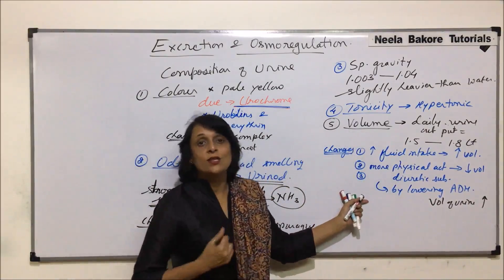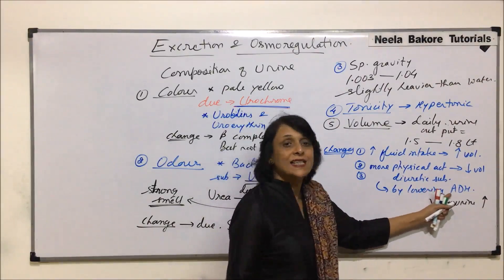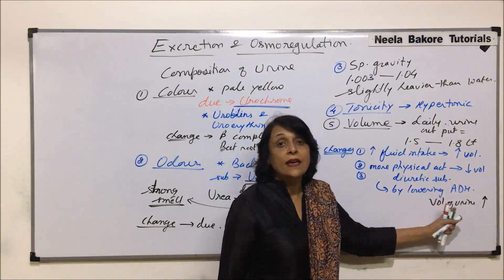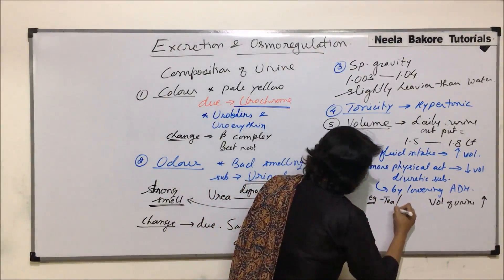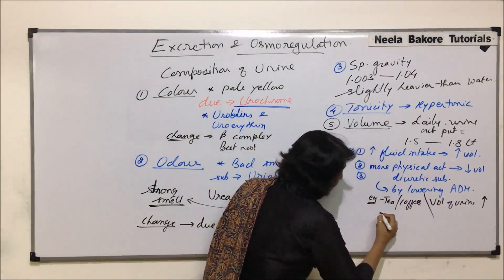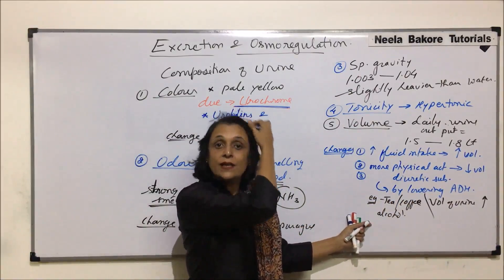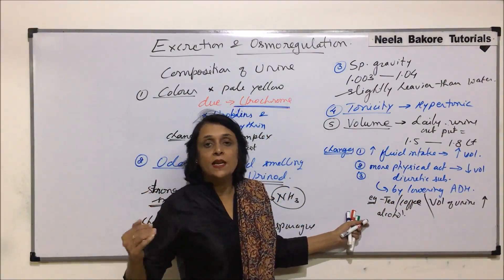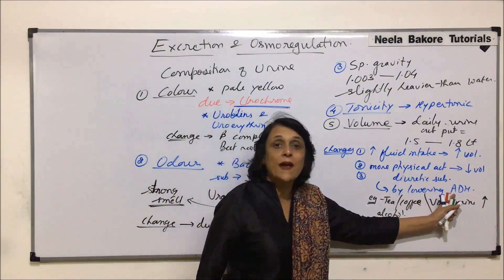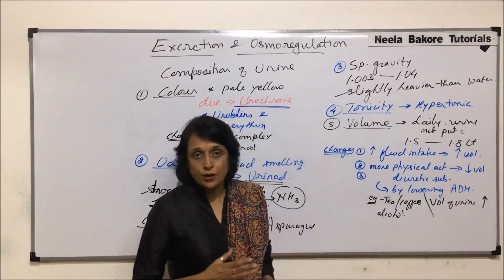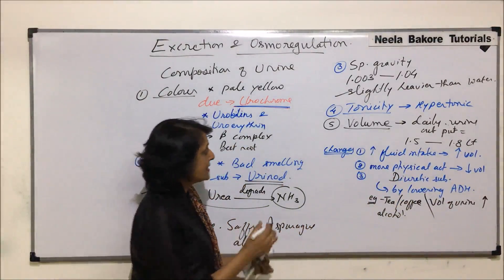Anti-diuretic hormone activity would be lower when a person takes diuretic substances, resulting in increased urine output. Examples of diuretic substances are tea, coffee, and alcohol. These are the main diuretic substances responsible for an increase in urine output or urine volume. They work by inhibiting the action of ADH, which normally helps in water absorption from the collecting duct.